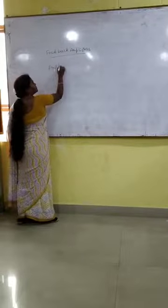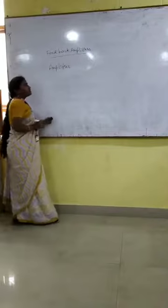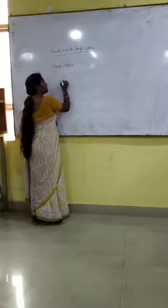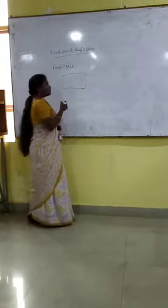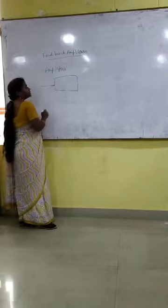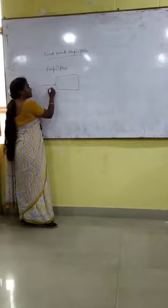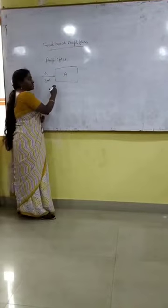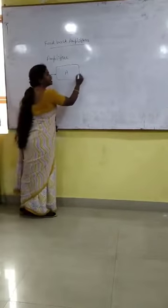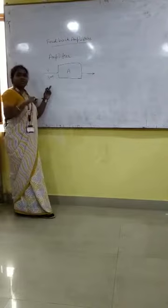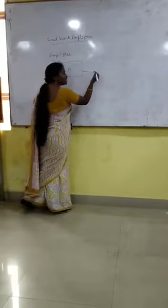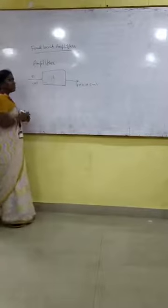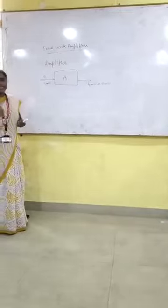So what is an amplifier? An amplifier, as the name itself suggests, amplifies the signal. It strengthens the weak signal. So if we give a 3 millivolt signal as input, this amplifier strengthens that voltage and gives more voltage compared to the input — maybe 4 millivolts or 5 millivolts. In simple terms, an amplifier amplifies the signal.